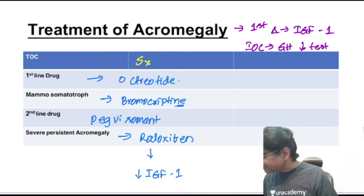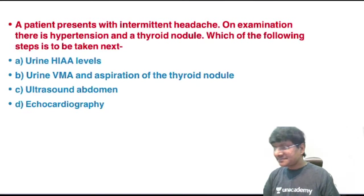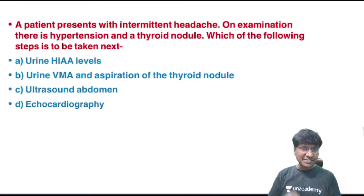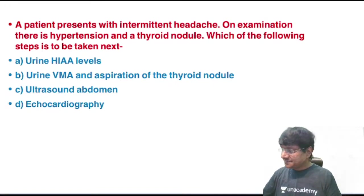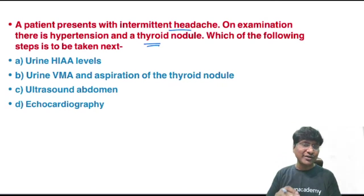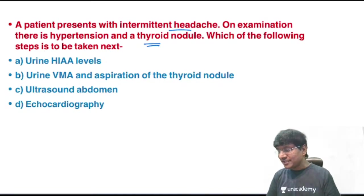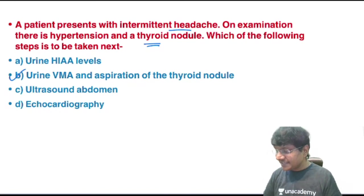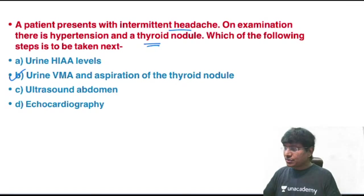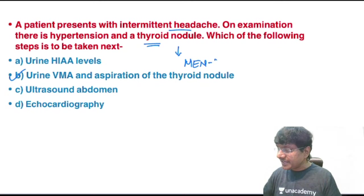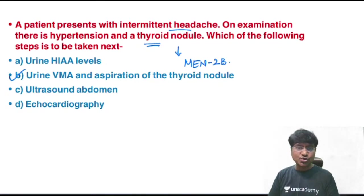Clinical question: a patient presents with intermittent headache, hypertension, and a thyroid nodule. The answer involves measuring urine VMA and aspirating the thyroid nodule — this is a MEN syndrome, specifically MEN-2B.